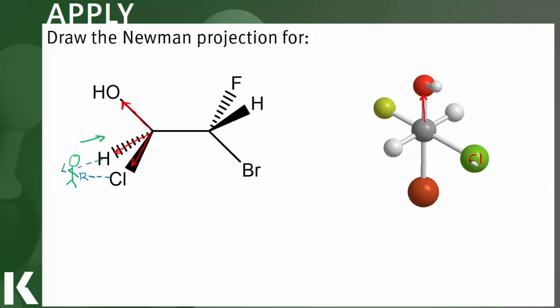So to draw a Newman projection, we basically just want to capture this picture in more of a pen and paper format. So let's do that right now. The first thing that we see as we look down this carbon-carbon bond is this big old carbon atom staring us straight in the face. So for our Newman projection, we draw a circle representing that carbon atom that's right in front of us.